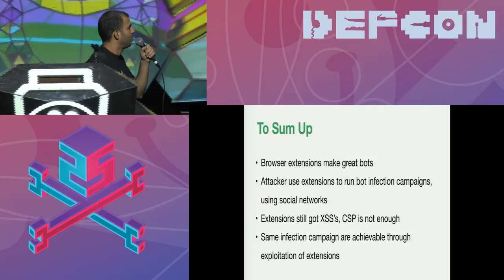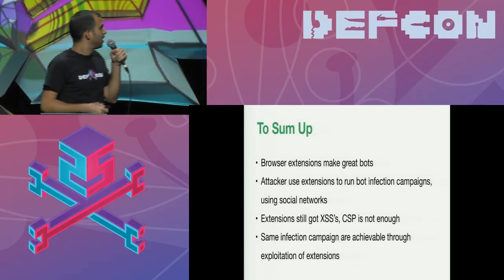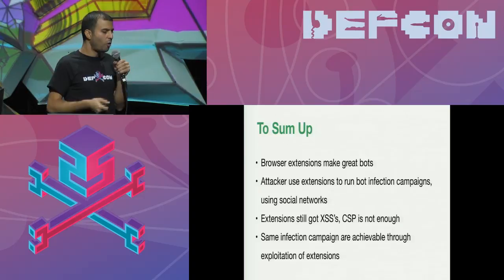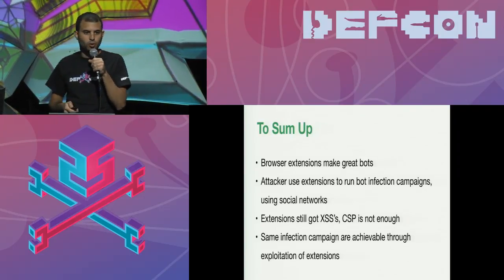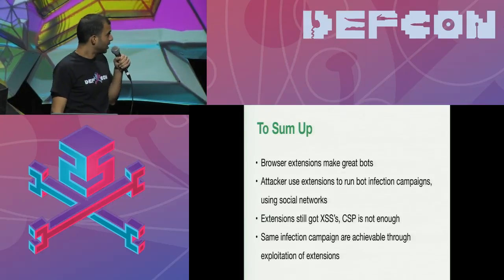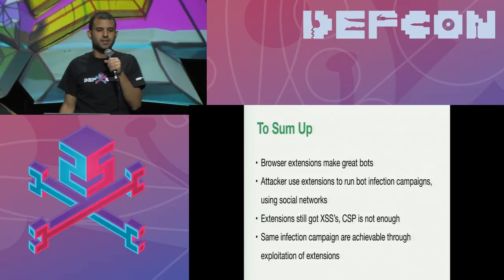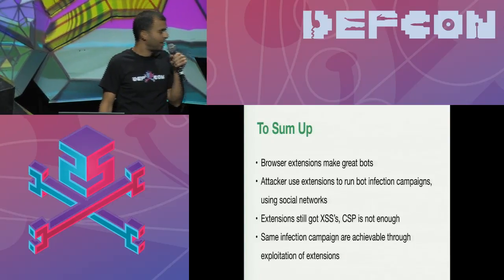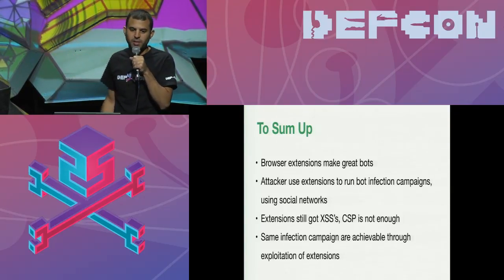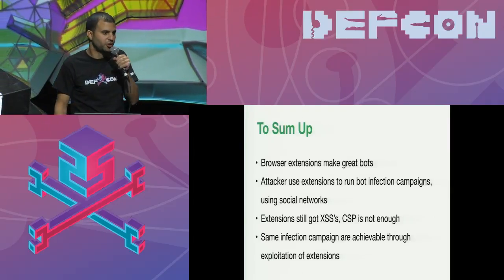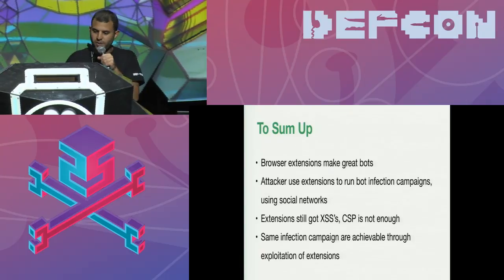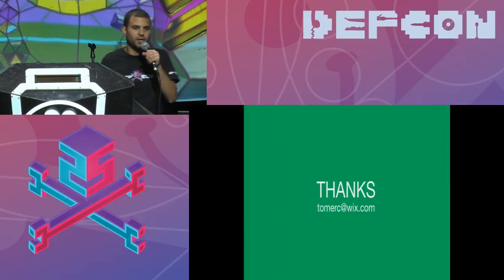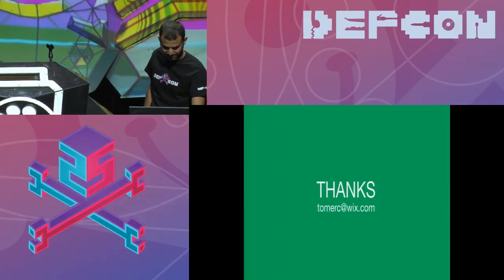This is what we saw: browser extensions make great bots, and as we speak there are attackers using Chrome extensions to create and control their botnets. We also saw that extensions still have XSS vulnerabilities, and CSP is not enough because there are many ways to create XSS. The same infection campaigns we saw in the Wix and Facebook attacks can be achieved by exploiting Chrome extension XSS vulnerabilities. If you have any questions, please approach me or catch me at this email. Thank you so much!